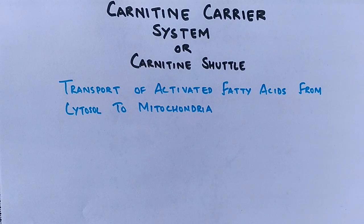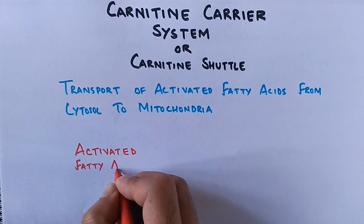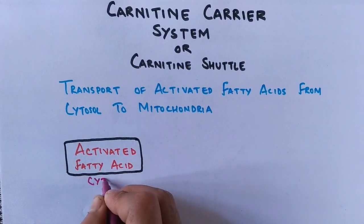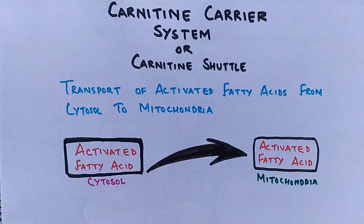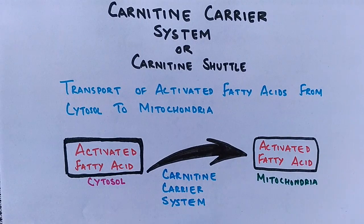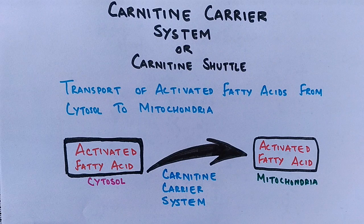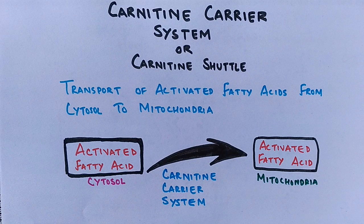Here we can see there is activation of fatty acid in the cytosol. This activated fatty acid is then transported to mitochondria. It must be noted that only the long chain fatty acids need the carnitine carrier system to get transported to the mitochondrial matrix. Short chain fatty acids, on the other hand, are transported as such into the mitochondrial matrix without any shuttle or carrier system. So only fatty acids with 12 or more carbons are transported to the mitochondrial matrix using this shuttle.